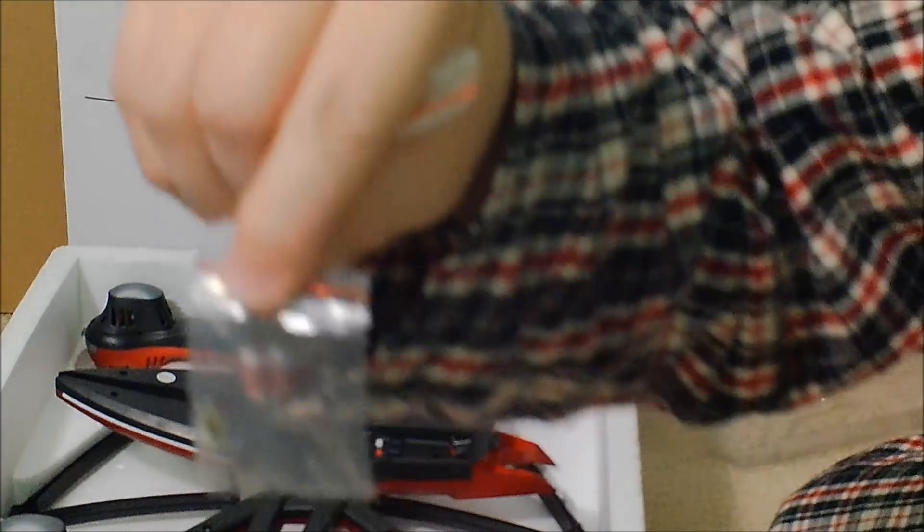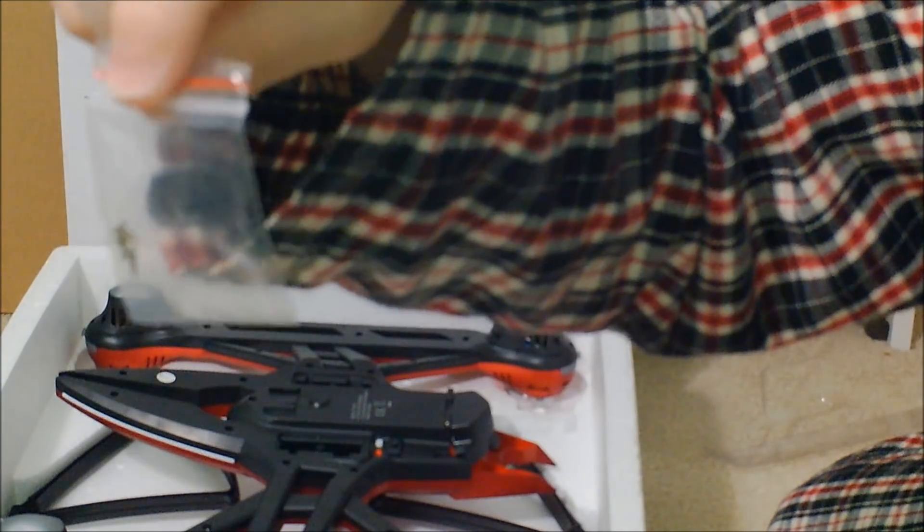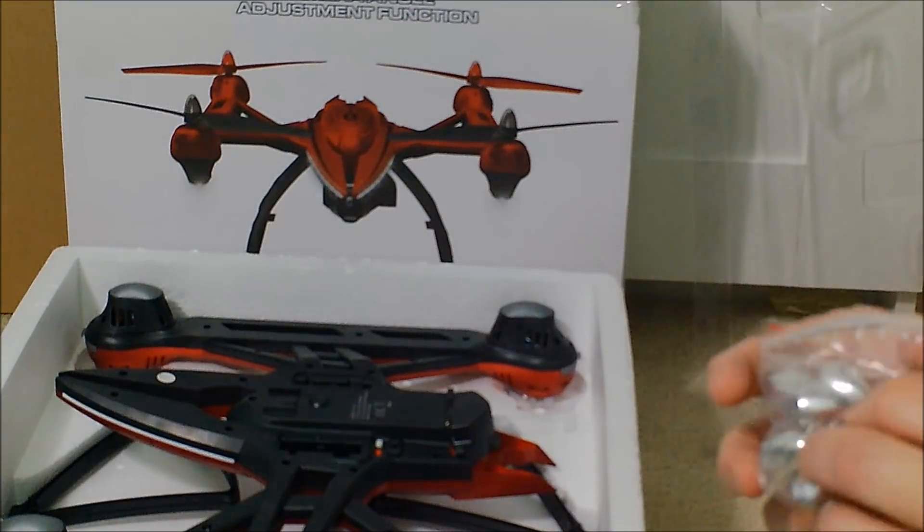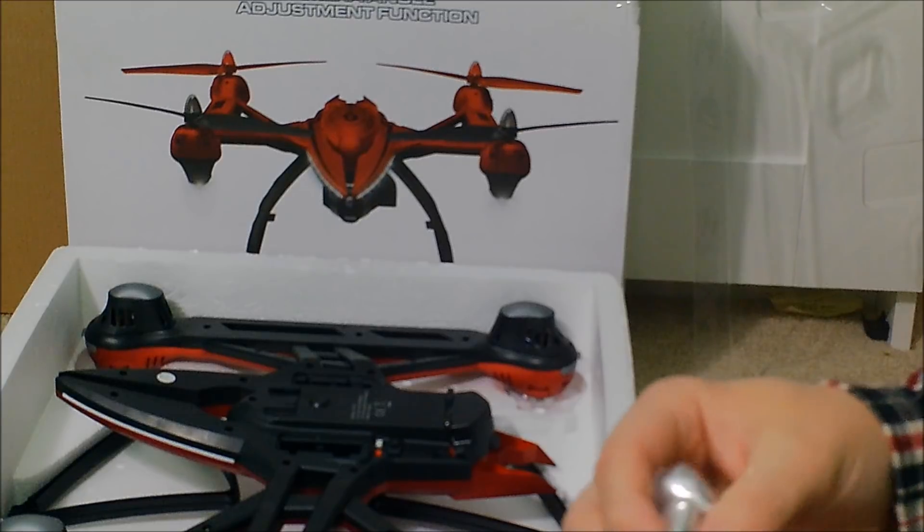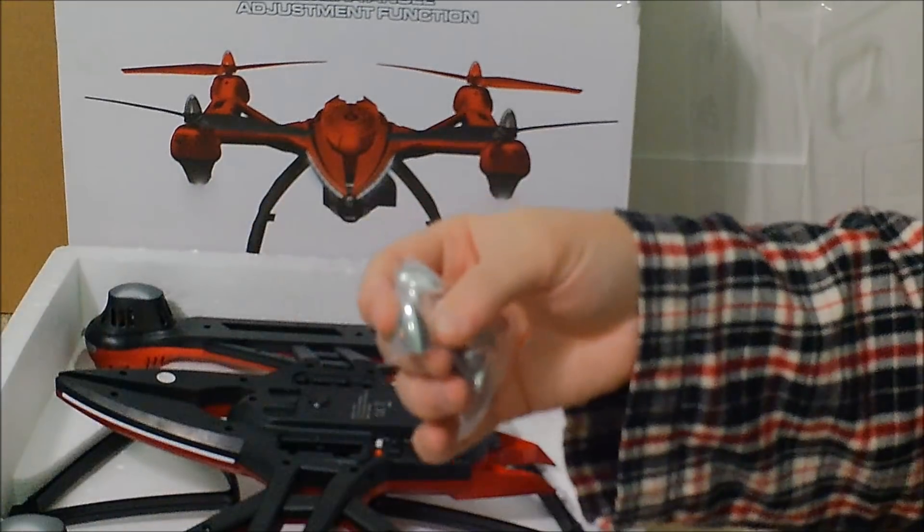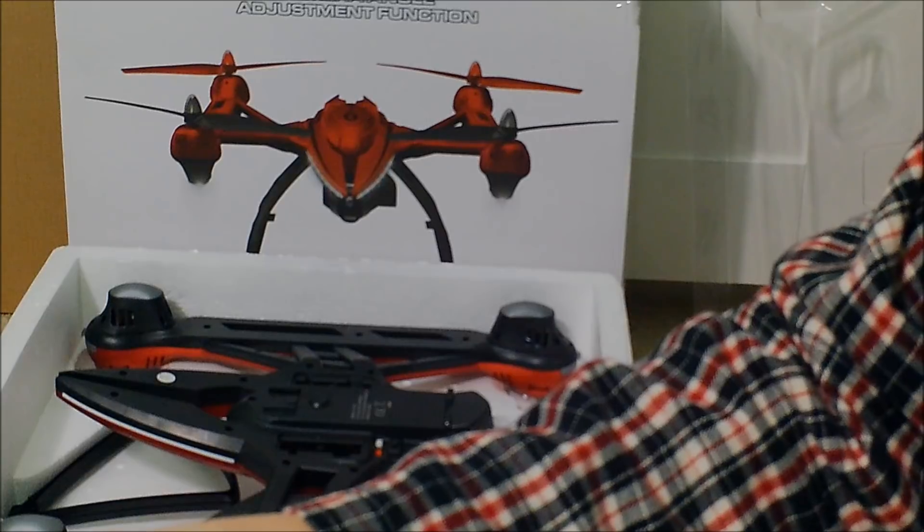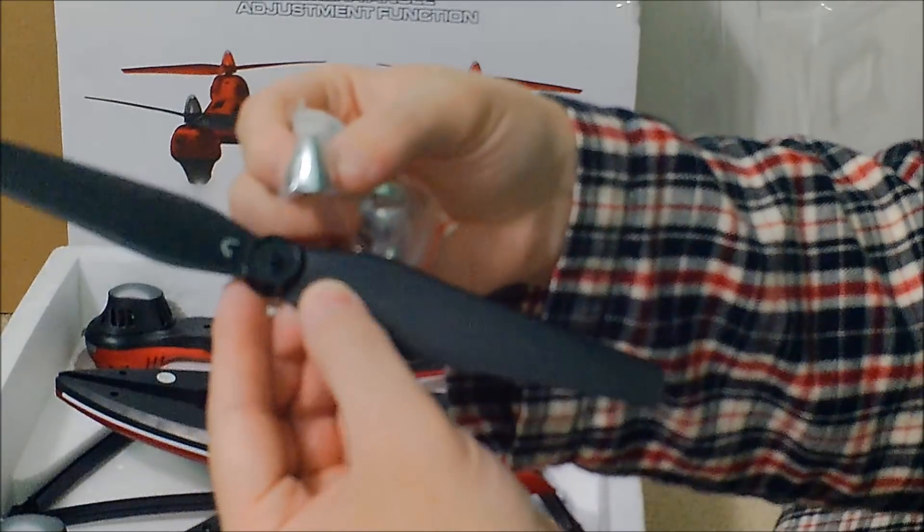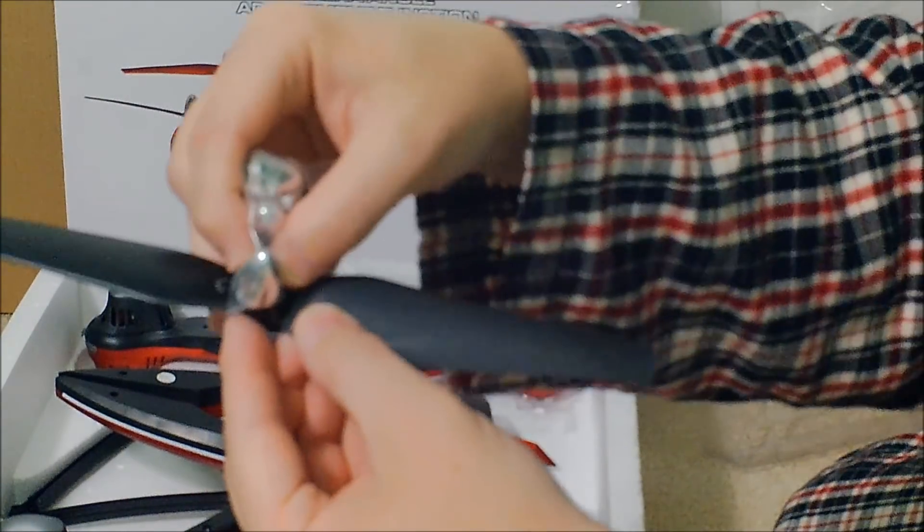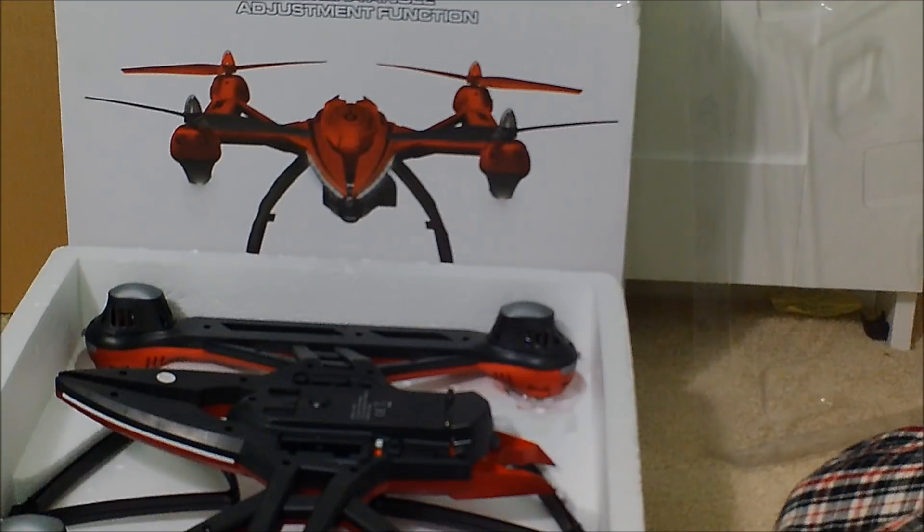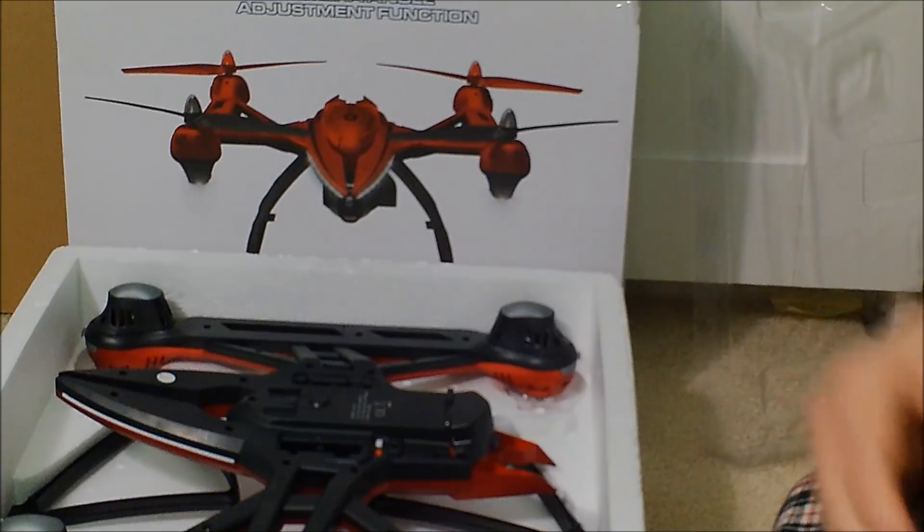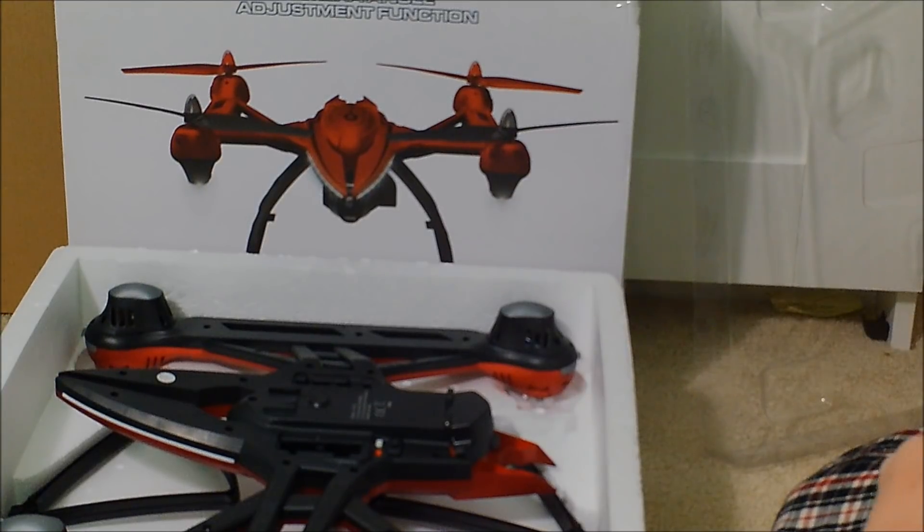We have another little bag of little screws. It's always fun to keep track of. And then we have the little decorative covers. These will go on top of the propellers when they're mounted, kind of cover up the screw and just makes it look a little bit more finished. Here's propeller, this will go right there on top.